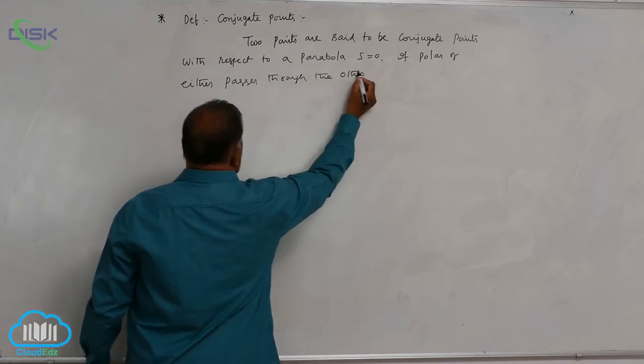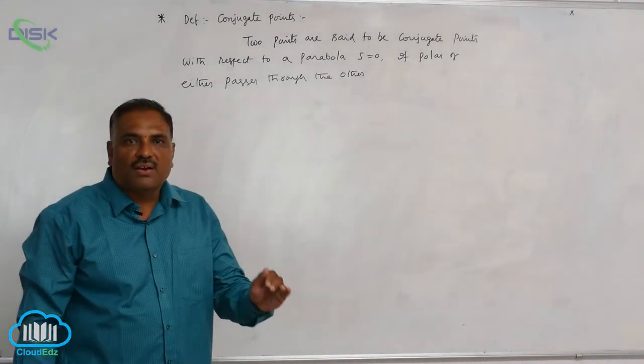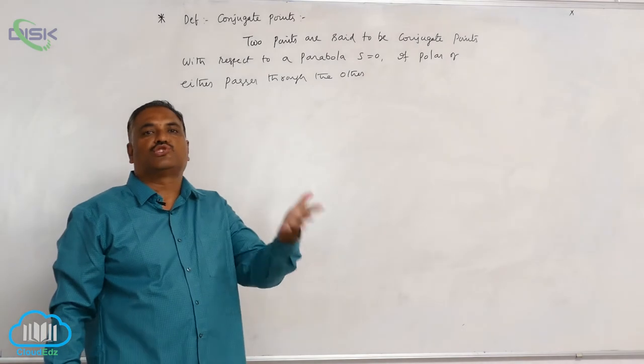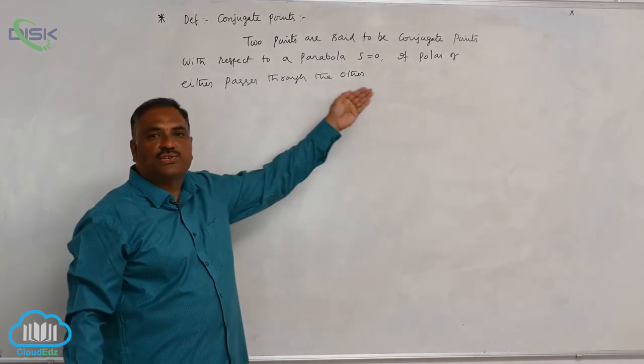That means polar of first point passes through the second point and polar of second point passes through the first point. That is what the meaning of polar of either passes through the other.